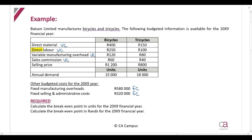In this example there are no semi-variable costs, because the focus is on the principles behind calculating the break-even point rather than splitting semi-variable costs. However, please note: if you do have semi-variable costs, you first need to split those into fixed and variable portions before performing any calculations. Then you can move on to answering the required.